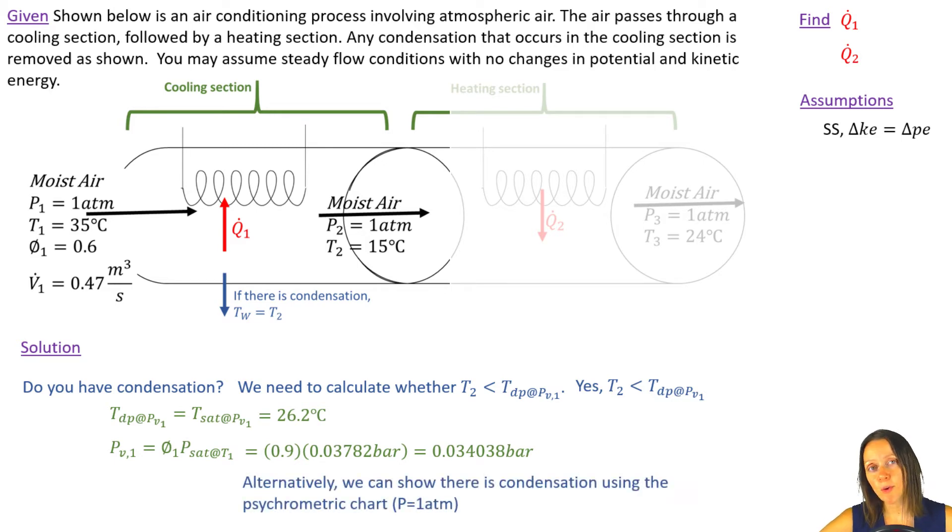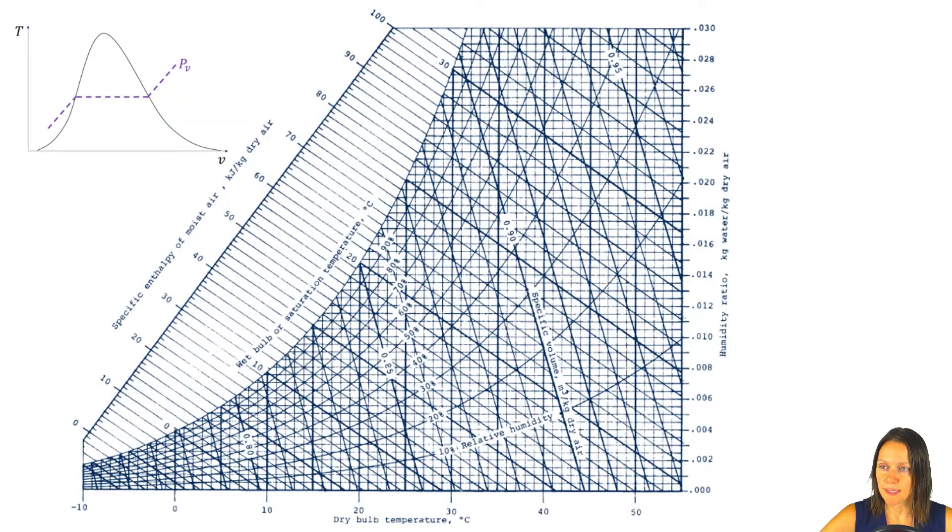There is another way that you can do this, a little bit easier way, and that's by using the psychrometric charts. You can do that because your pressure is at 1 atm. Let's look at my psychrometric chart, and I'm going to follow along on a TV diagram the behavior of the water within that atmospheric air.